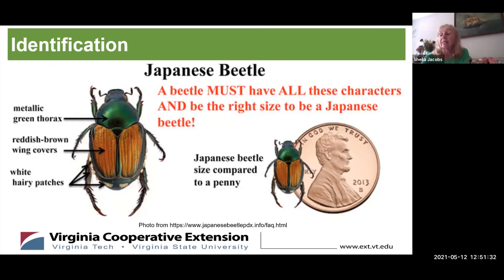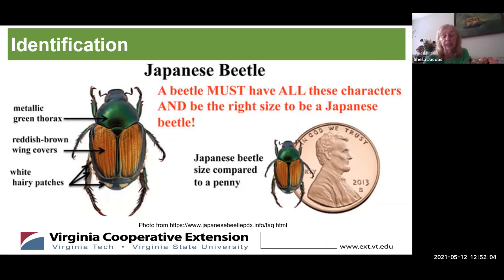Adult Japanese beetles are about 7/16 of an inch long — you can see their size compared to a penny. They must have all these physical characteristics: a metallic green colored head and thorax, five patches of white hair on either side of their abdomen and two patches on the tip of the abdomen, and coppery brown wing covers that do not quite cover the tip of the abdomen. They have antennae that are clubbed at the end and may spread to a fan-like form, and six legs with sharp spiny feet to help ward off predators.